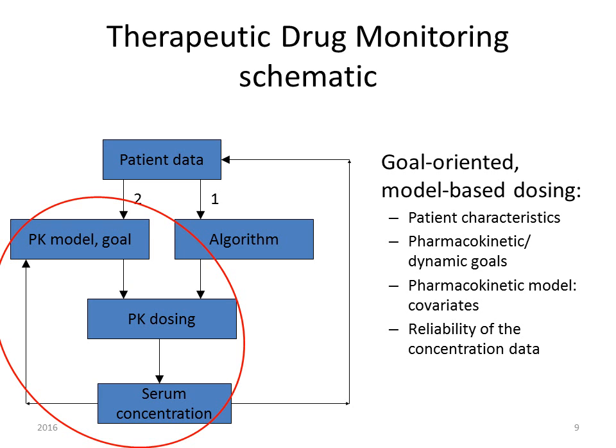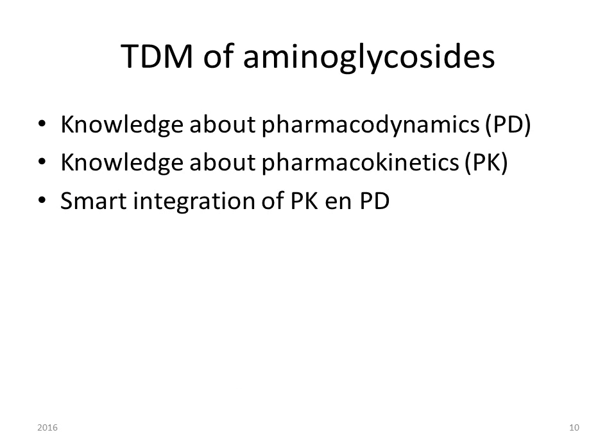This circle is repeated as long as necessary or as long as therapy takes. Back to the example of the aminoglycosides. For the therapeutic drug monitoring of aminoglycosides you need knowledge about the pharmacokinetics of these antibiotics. And then you do a smart integration of pharmacokinetics and pharmacodynamics.